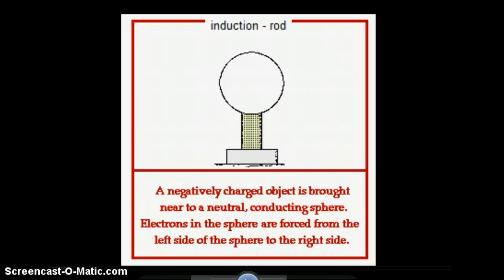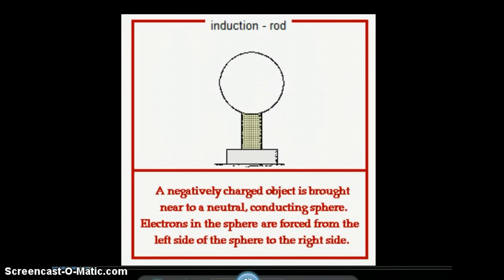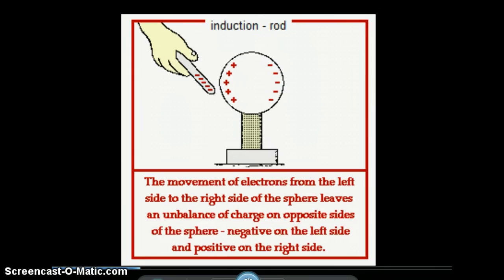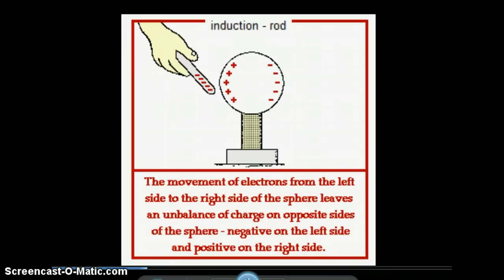The first step in the process is to have the neutral object here, the sphere, and bring some kind of charge toward it. It's not touching it. That would just be charging by conduction. By bringing the negative rod, in this case, close to the sphere, we cause a polarization of the charges.